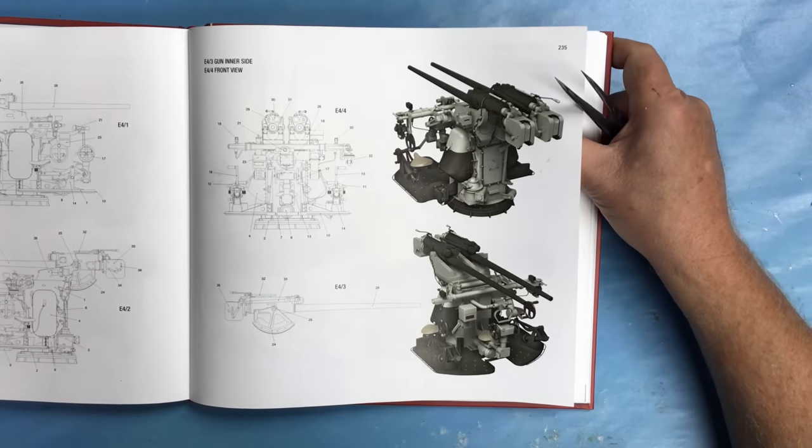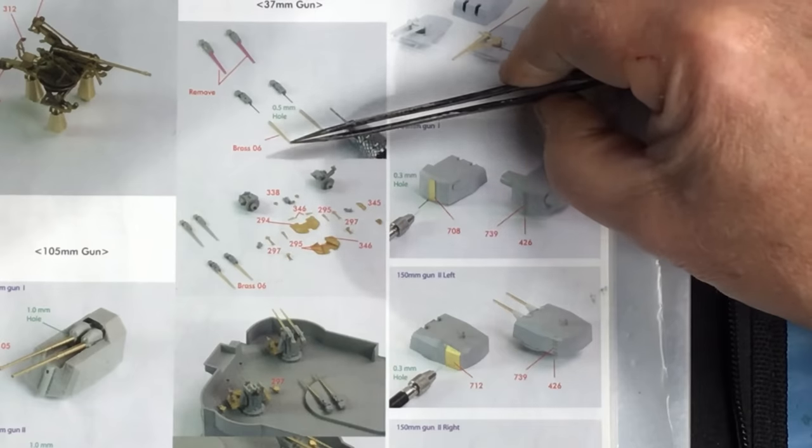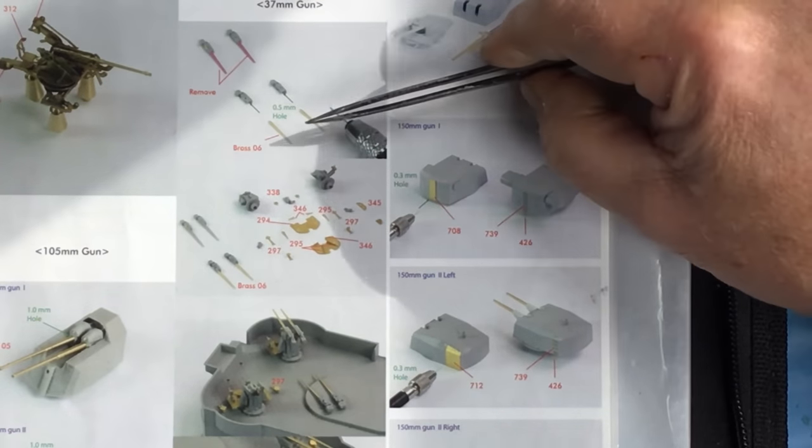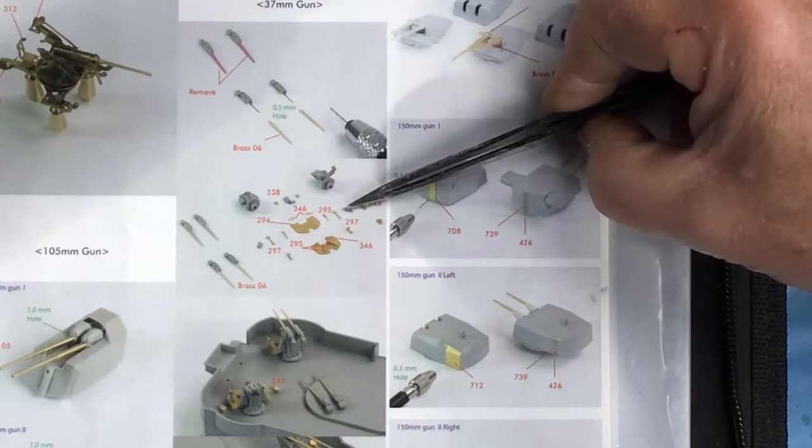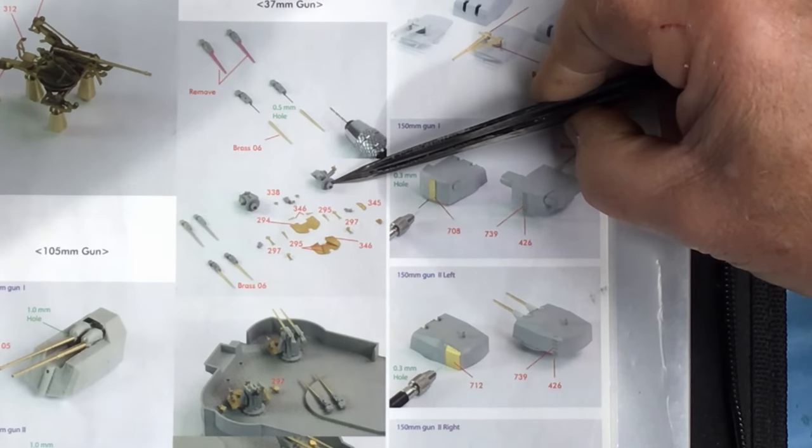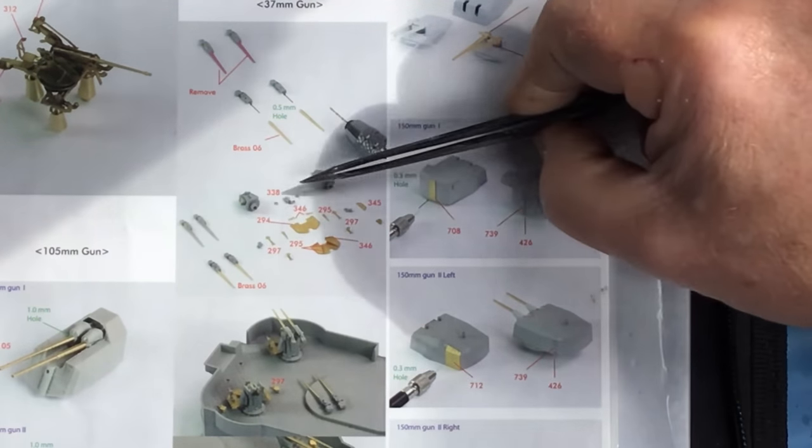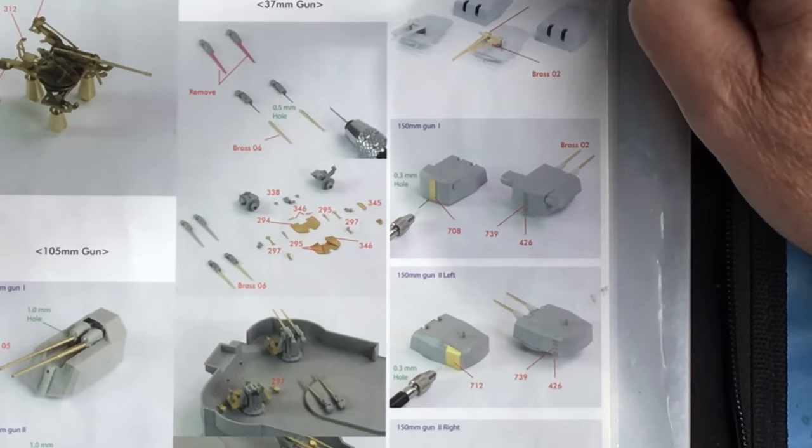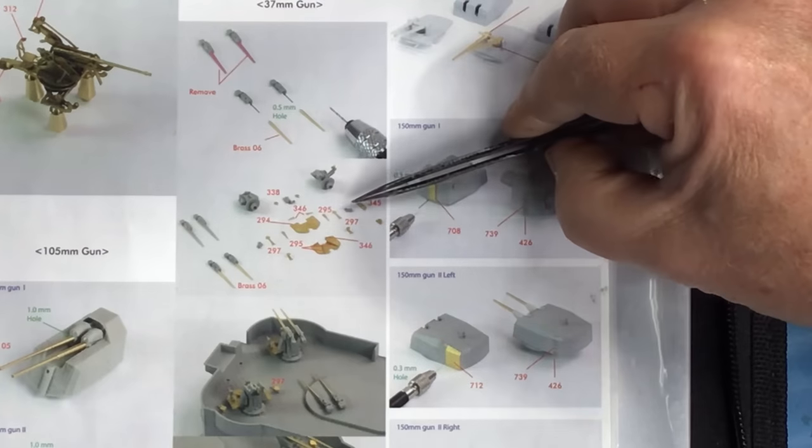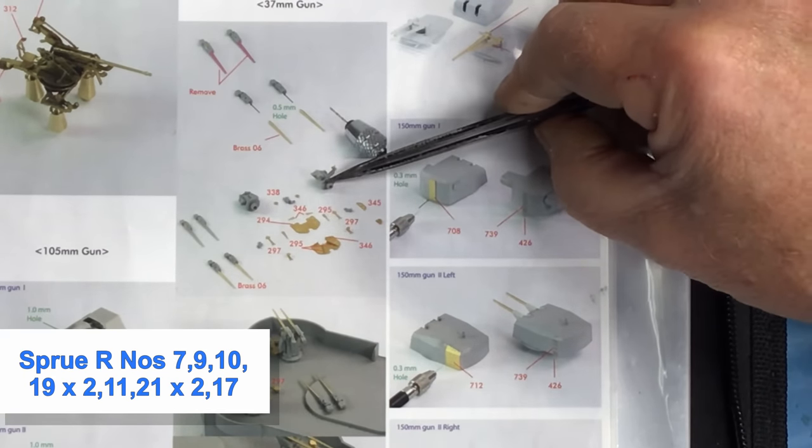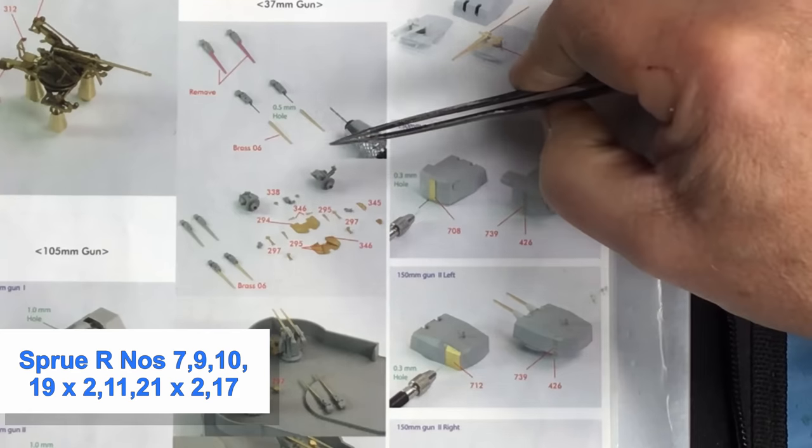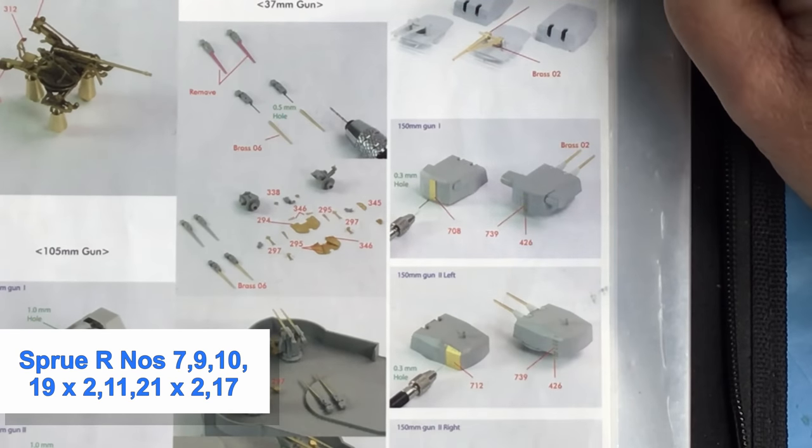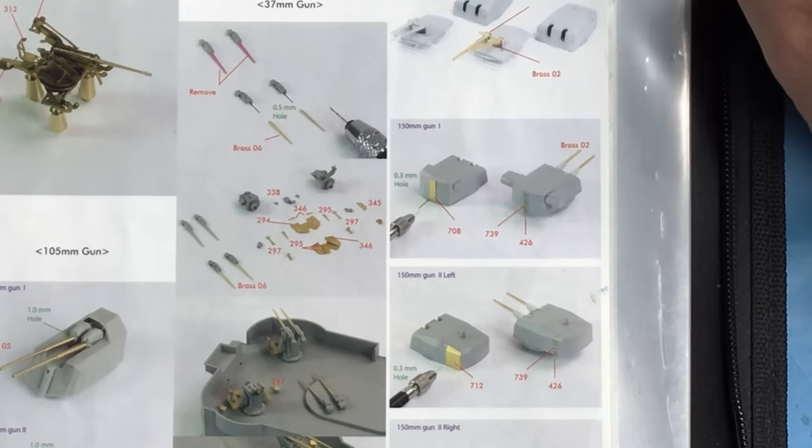So we'll make a start and get the trumpeter parts sorted out. This pair of photographs here is all really that Pontos give us about constructing these 37mm guns. The difficulty I had was identifying the trumpeter parts that we needed for the build because Pontos don't bother to number the trumpeter parts that we're going to be using. But I worked out which ones you do need, and I've made a list of them at the side of the screen. These are the parts that you're going to need from the trumpeter kit to start with.